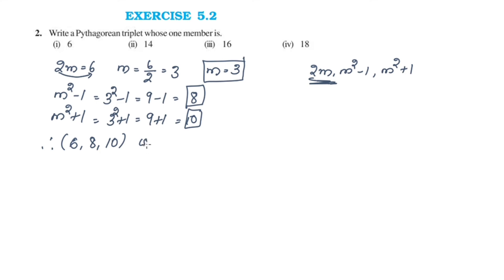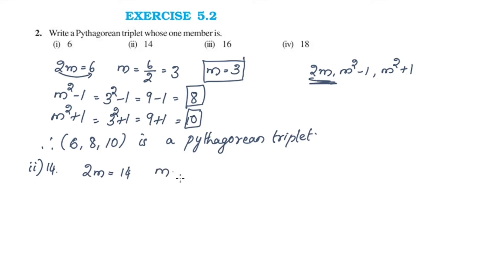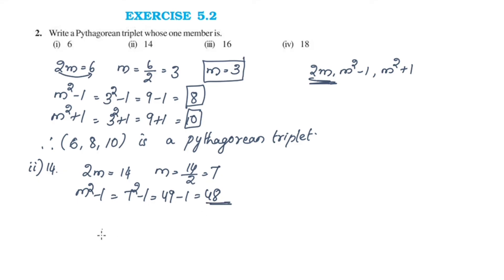For the number 14: 14 = 2m, so m = 7. Then m²−1 = 49−1 = 48, and m²+1 = 49+1 = 50. So the Pythagorean triplet is 14, 48, 50.